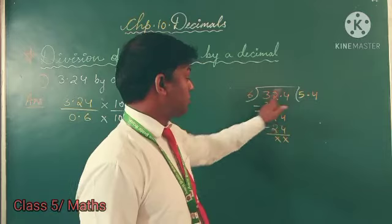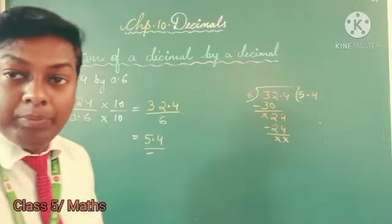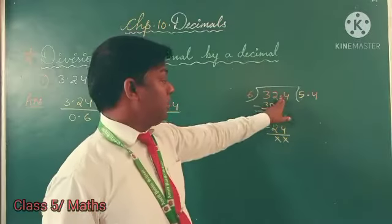6 times 4 is 24, so we get remainder 0. And the answer is 5.4. Remember that decimal point. So the answer is 5.4.